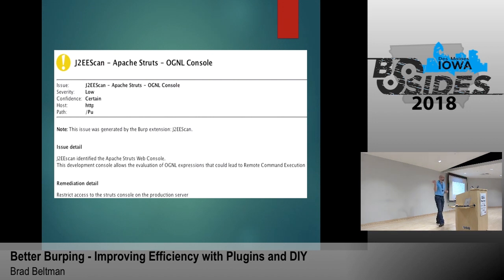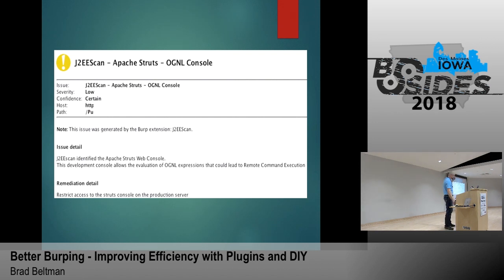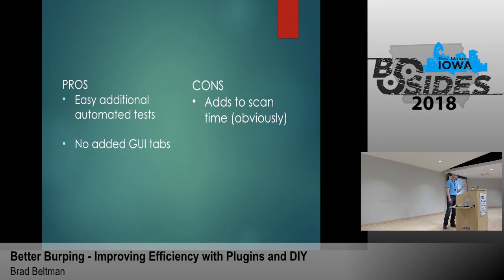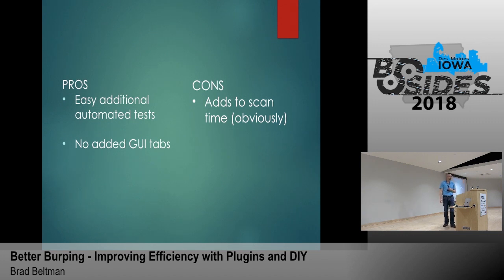Here's another recent engagement where J2EE Scan caught something. I didn't go into the engagement saying I'm going to find an OGNL console — it wasn't even on my radar. But there it was. That console lets you evaluate expression language statements, and it ended up being a very fruitful finding. The pro is it's really easy to add a lot of automated testing into the scanner. The only con is it will add time to your scan, obviously.